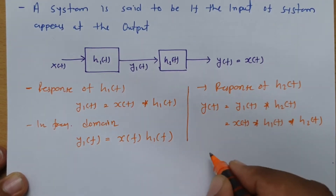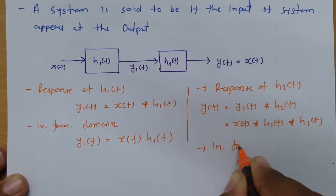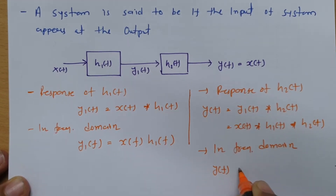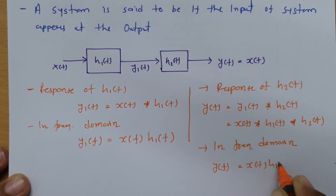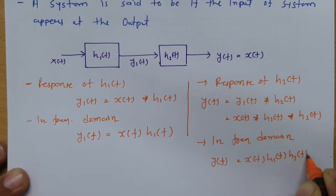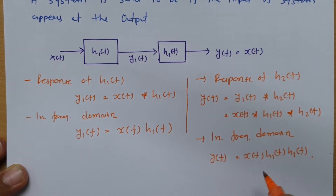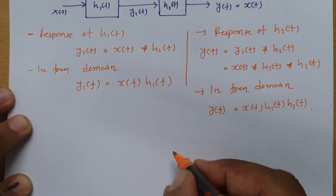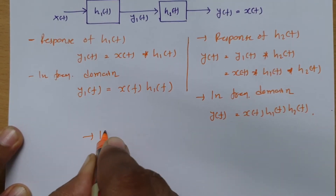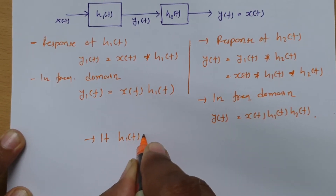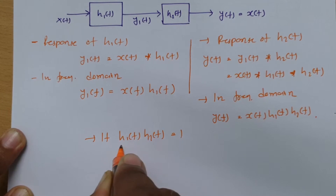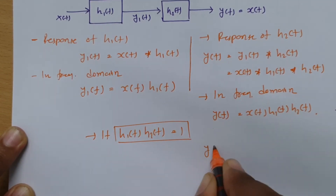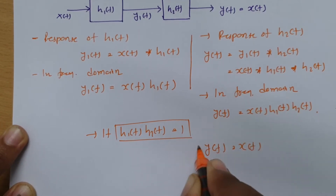So your output response y(t), and in the frequency domain you can write: Y(f) = X(f) · H1(f) · H2(f). Now here, if H1(f) · H2(f) equals 1, then Y(f) = X(f) is possible.